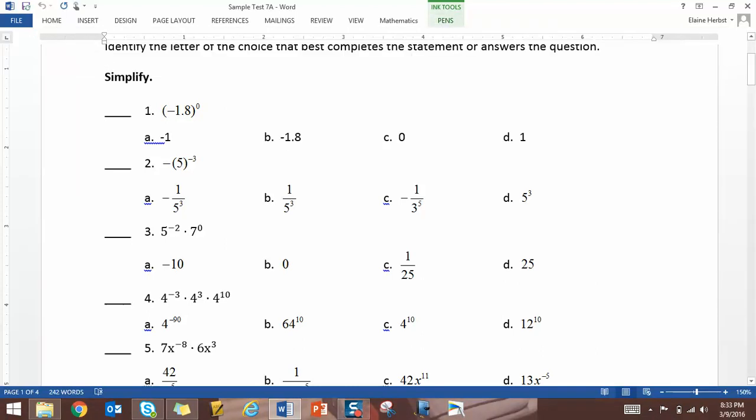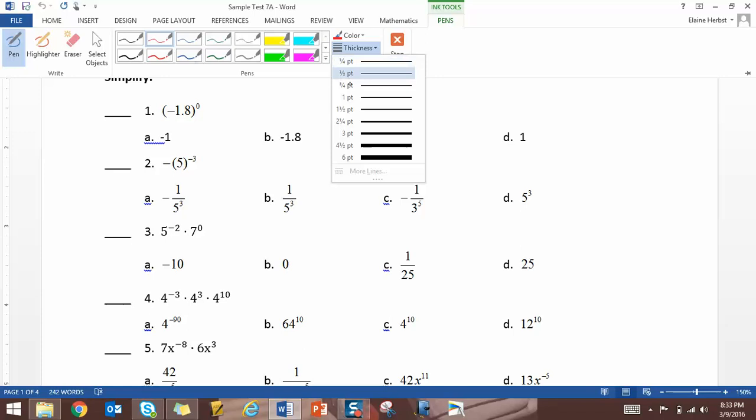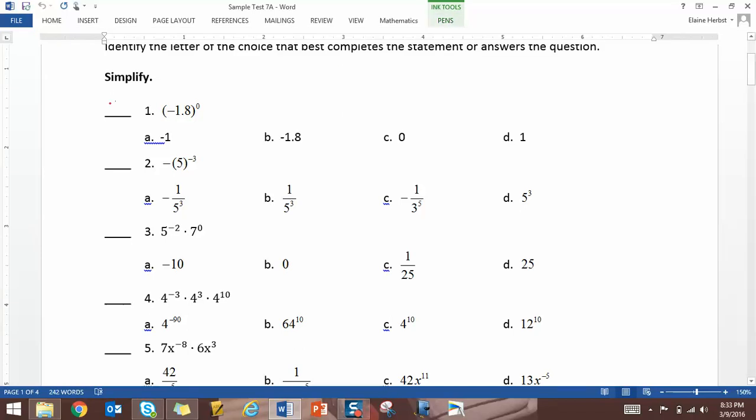So for number 1, it's negative 1.8 to the 0 power, and we've talked several times that anything to the 0 power is 1, so the answer is D.